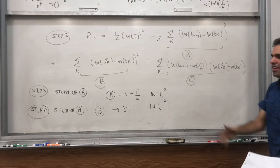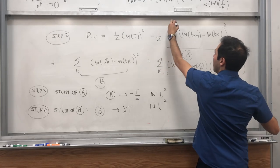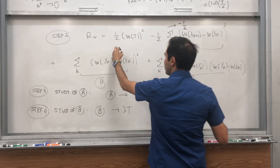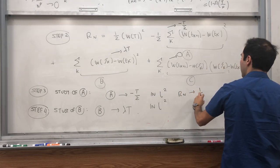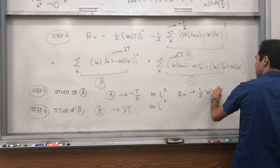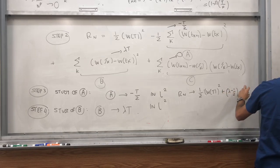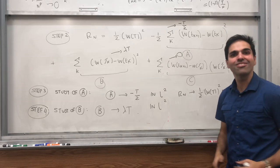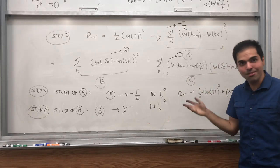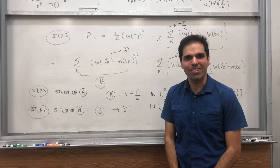So coming back to our result: the main term goes to ½w_t², term A goes to minus t/2, term B goes to λt, and term C goes to 0. So what do we get? R_n goes to ½w_t² + (λ - ½)t — which is precisely what we wanted. So indeed, in L² we have that this holds, and we are done. Interestingly, the result depends on the choice of endpoints, which I've never seen before — but this is really cool. If you like that and want to see more math, please subscribe to my channel. Thank you very much.